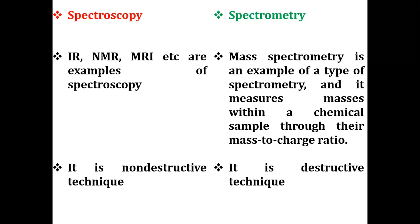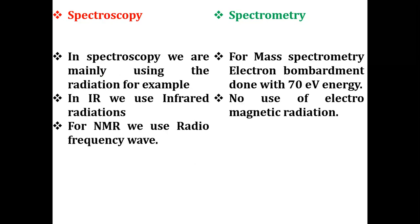In spectroscopy, electromagnetic radiation is used as the analytical tool — for example, infrared radiations in IR spectroscopy and radio frequency waves in NMR. In contrast, mass spectrometry does not use any electromagnetic radiation. Instead, the sample is bombarded with a 70 electron-volt energy beam. This is the key final difference: in spectroscopy, radiations are used; in spectrometry, no electromagnetic radiation is used.